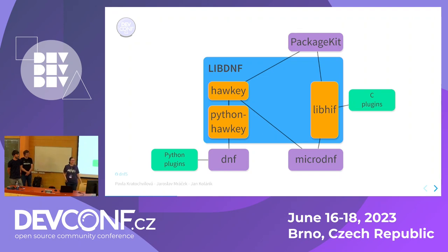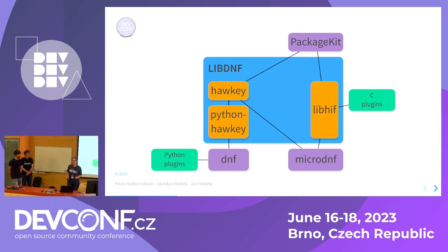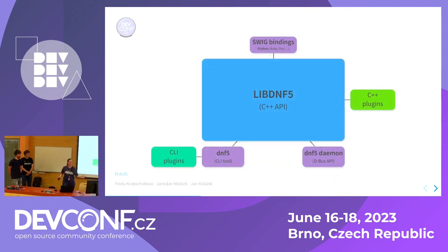There are also two kinds of plugins — C plugins and Python plugins — with overlapping functionality. We got to a point where it was very difficult to make improvements without breaking compatibility. This is where DNF5 comes in.